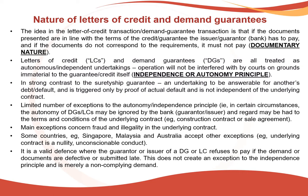There is a limited number of exceptions to the autonomy principle. In certain circumstances, the autonomy of the demand guarantee or letter of credit may be ignored by the bank or other guarantor or issuer, and regard may be had to the terms and conditions of the underlying contract — for example, a construction contract or a sale agreement. The main exceptions concern fraud and illegality in the underlying contract. Some countries, for example Singapore, Malaysia and Australia, accept other exceptions — for example, that the underlying contract is a nullity or that a party has made itself guilty of unconscionable conduct.